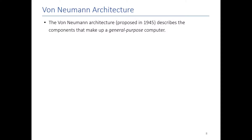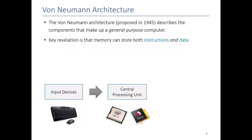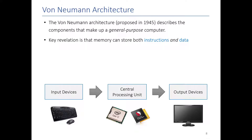In 1945, von Neumann came up with an architecture to describe what he called a general purpose computer. He wanted to help us understand what it meant to be a computer in terms of hardware. His key revelation was that the memory in a computer should be used to store both instructions as well as the data being processed. In the von Neumann architecture there are input devices — keyboard, mice, microphones, touch screens — a CPU that processes that information, output devices like your monitor, printers, and speakers, and memory used to store both instructions and data. I'm going to show you now a quick video where we talk about the parts of a computer.